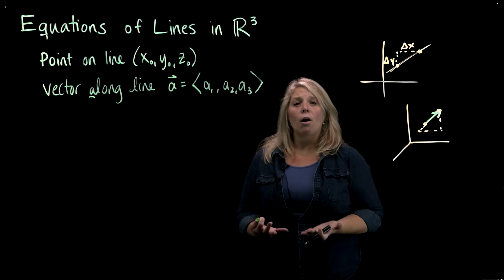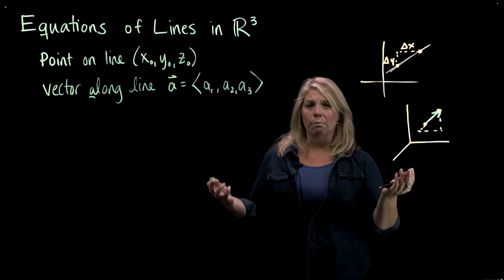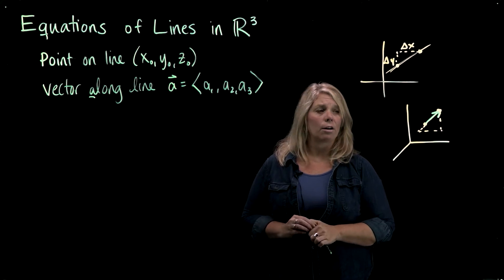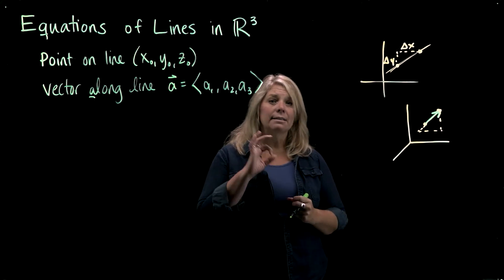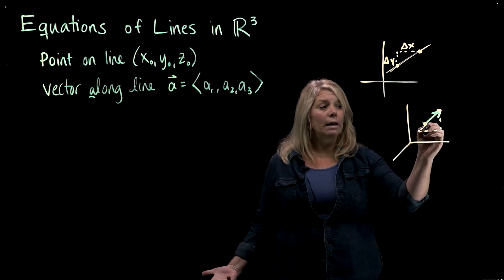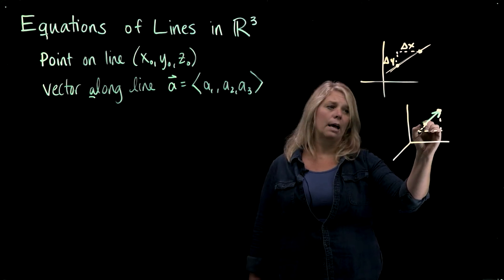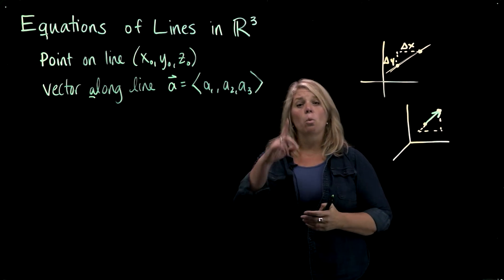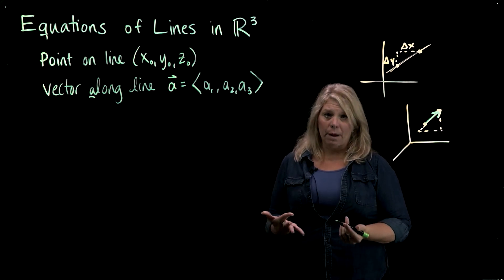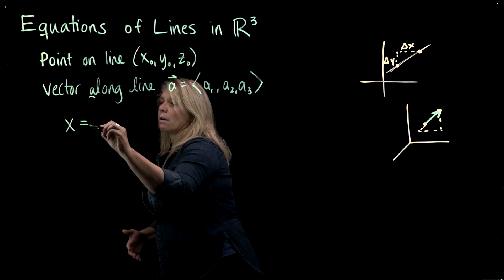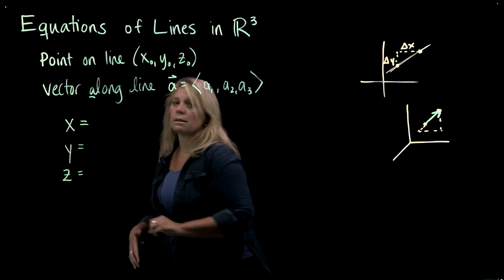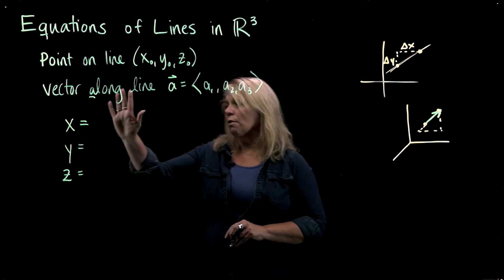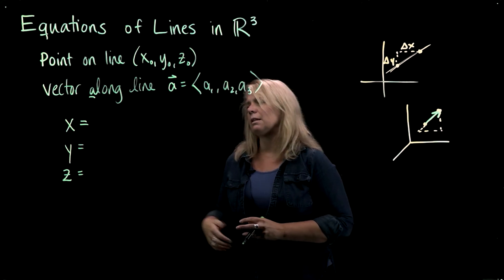Just as you know how to write an equation of a line in R2 using y = mx + b or a point-slope formula, you need to know how to write the equation of a line in R3. Because the line is one-dimensional but lives in three-dimensional space, you can't use one equation — you need parametric equations. So you'll have three equations, one each for x, y, and z, all involving a parameter, typically t.